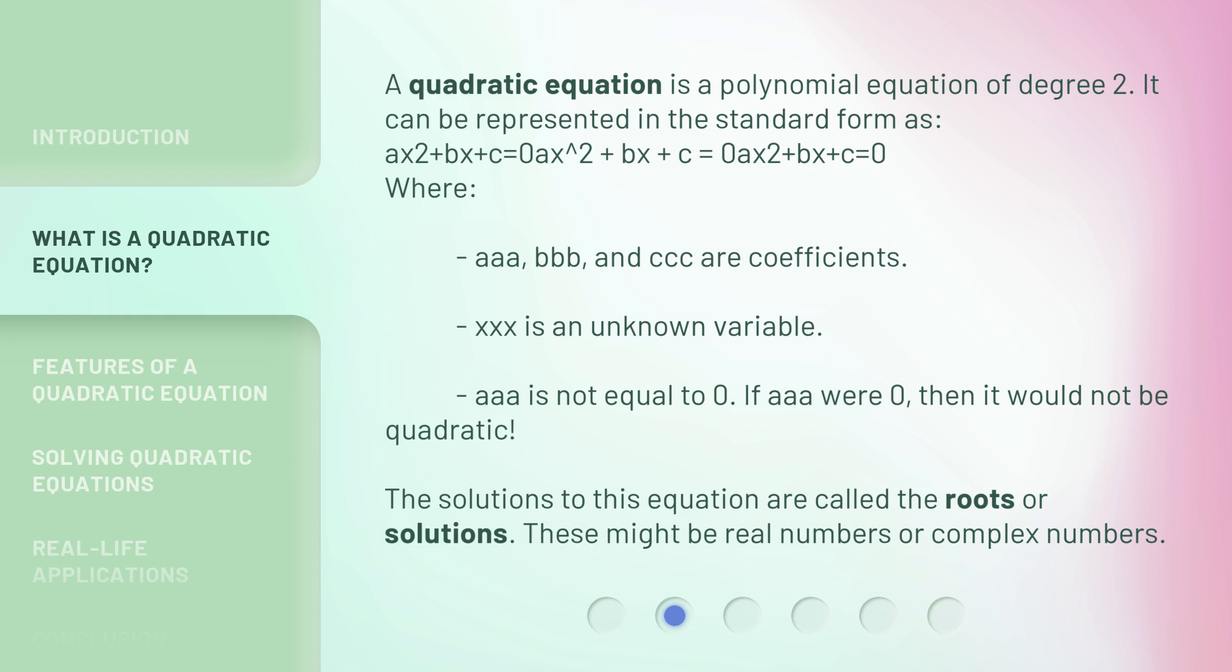a is not equal to 0. If a were 0, then it would not be quadratic. The solutions to this equation are called the roots or solutions. These might be real numbers or complex numbers.